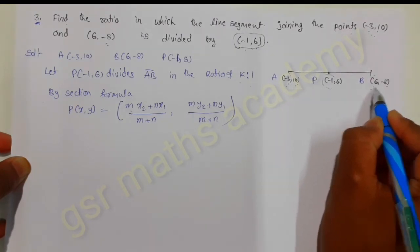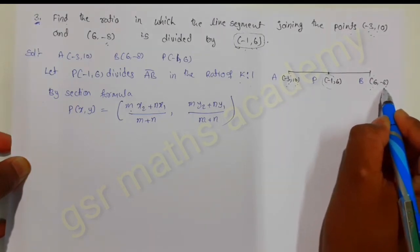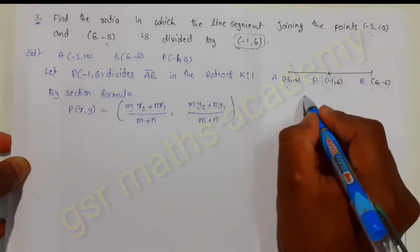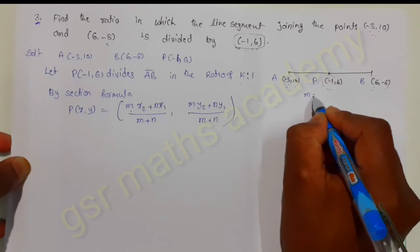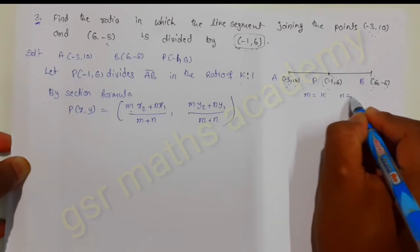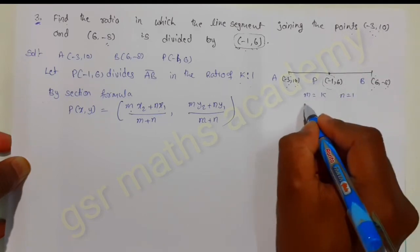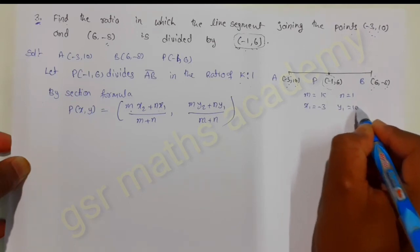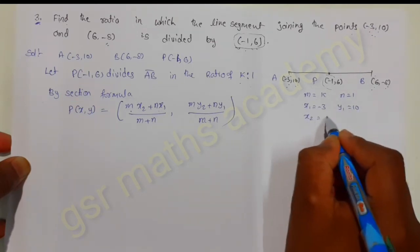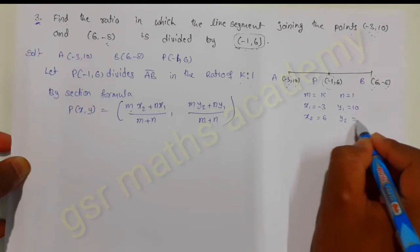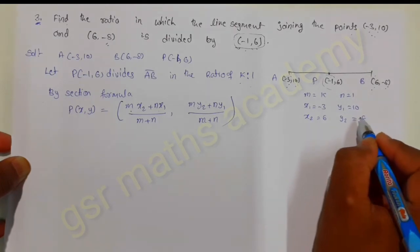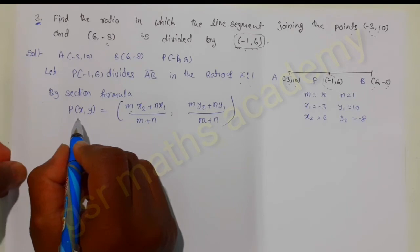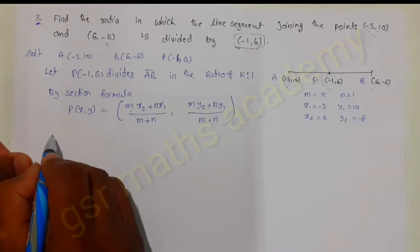x2 is 6 and y2 is minus 8. For convenience, let m equal k and n equal 1. Then x1 is minus 3, y1 is 10, x2 is 6, y2 is minus 8. We already know the coordinates of point P as minus 1 comma 6.